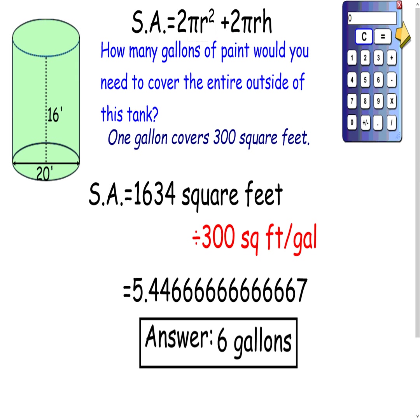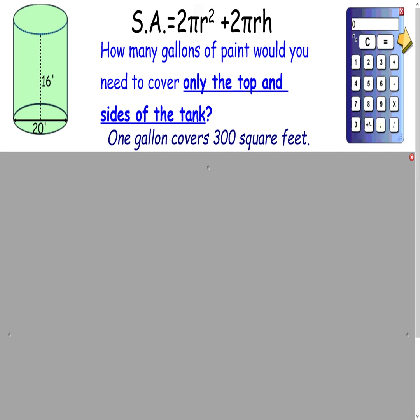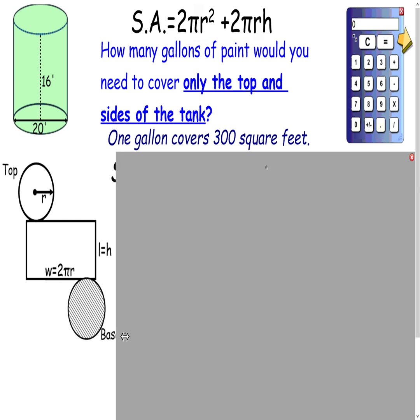Okay, one last thing to talk about. Say this tank is sitting on the ground, and you don't actually want to paint the bottom of the tank, because no one's going to see it. So you're only going to paint the top and the sides of the tank. How many gallons of paint do you need then? Okay, so let's look at that 2D view again.